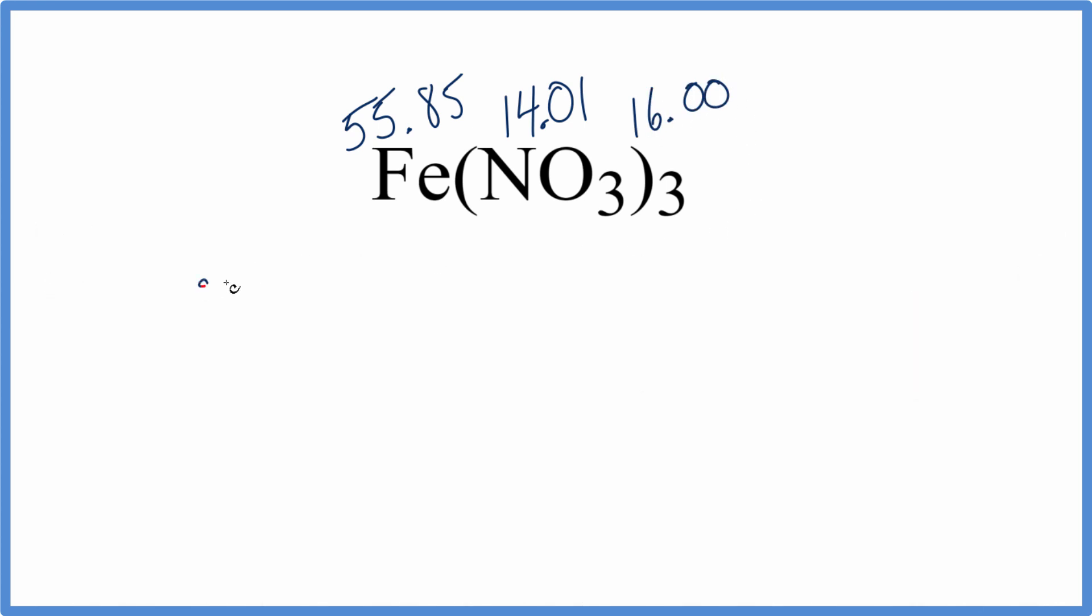So we write our 55.85 plus, and we'll use the parentheses just like in the formula here. Nitrogen 14.01 plus oxygen, it's 16.00, but we have 3. So 3 times 16.00 is 48.00. We'll close our parentheses and then multiply by the 3.